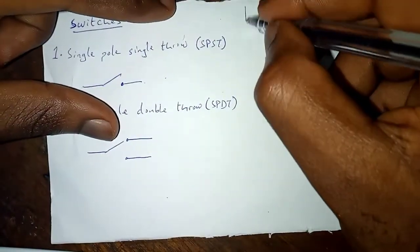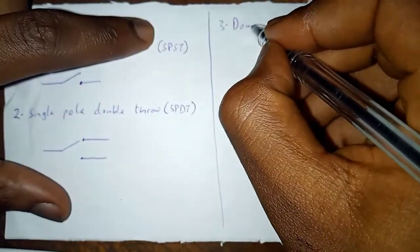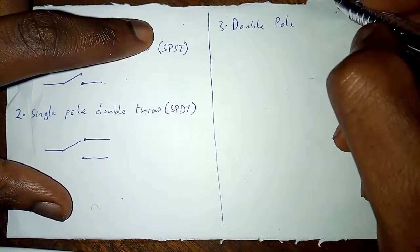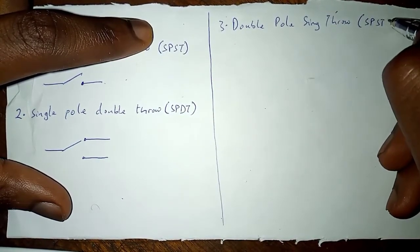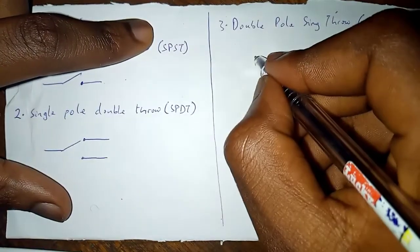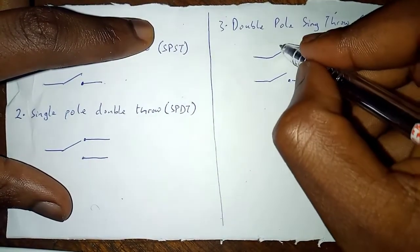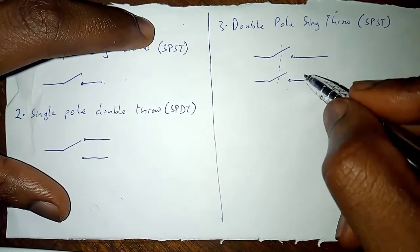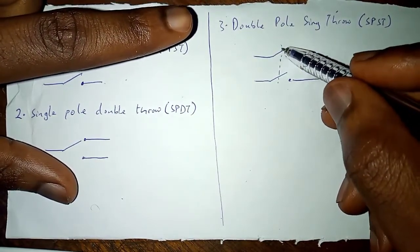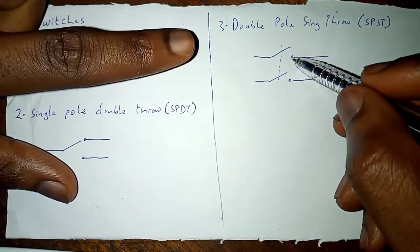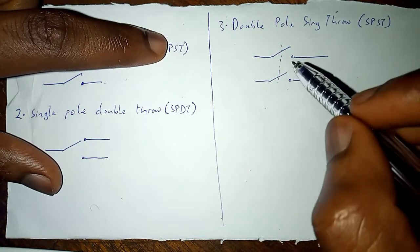The next one we would look at is the double pole, single throw switch, DPST. The symbol is like this: one pole, one throw, another pole, another throw, then something to show the connection. This shows that only one controller is needed to move the poles. Whenever it's moved, that closes or opens the circuit. It's more like two different SPSTs controlled by one controller.